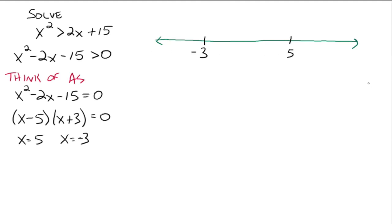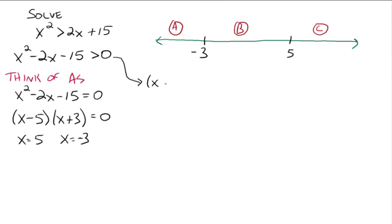If you had more zeros, you would have more regions on your number line, but the concept stays exactly the same no matter how many regions you have. We're going to name these region A, region B, and region C. Going back to x squared minus 2x minus 15 greater than 0 — the left-hand side factors into x minus 5 times x plus 3, so we write it as such: x minus 5 times x plus 3 is greater than 0.